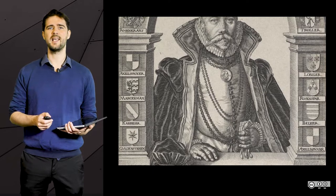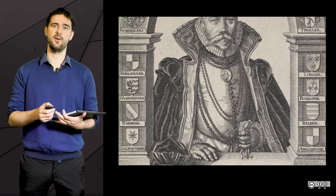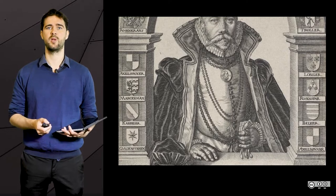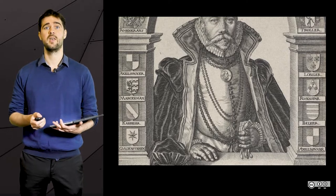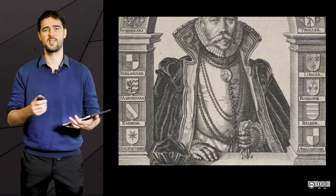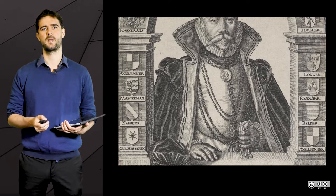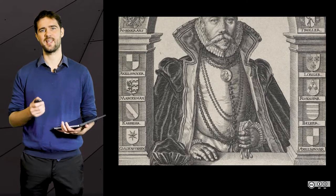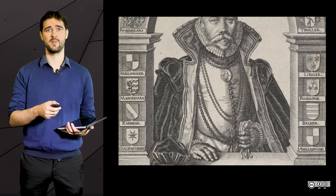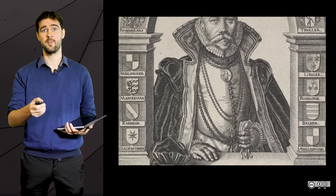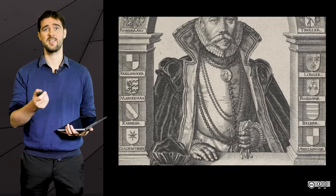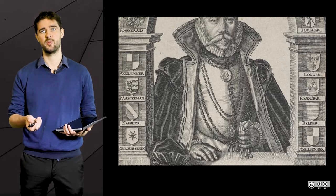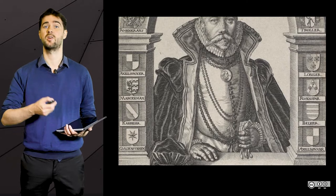You all know that the earth revolves around the sun and that we owe this heliocentric system to Copernicus. What is less known, though, is the other system that was at the time a competing explanation: the geo-heliocentric system of Tycho Brahe.